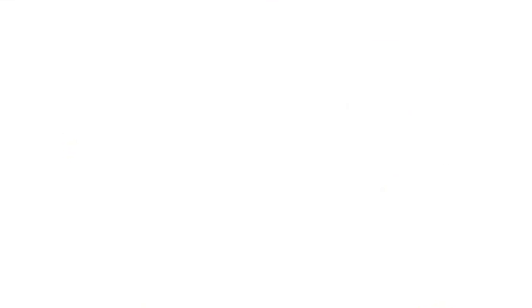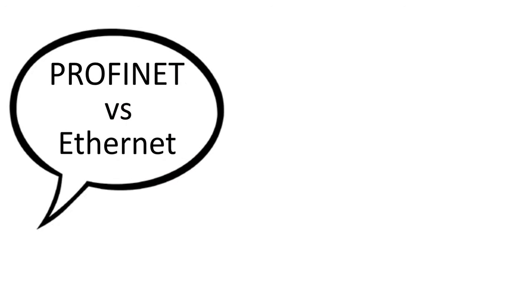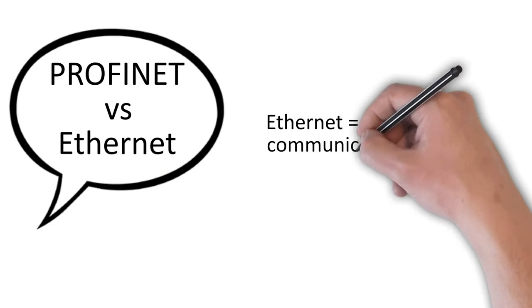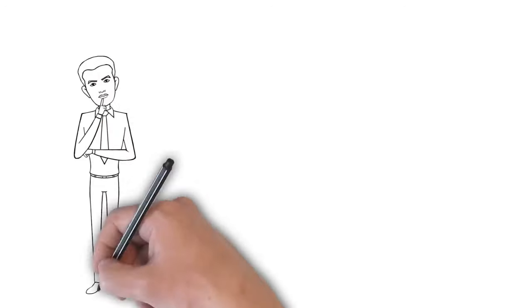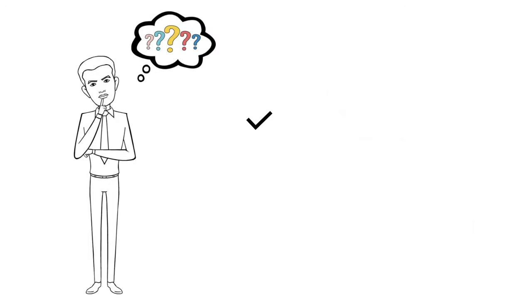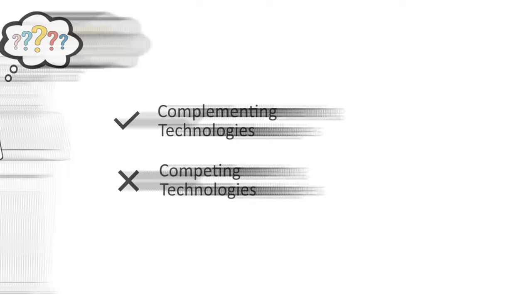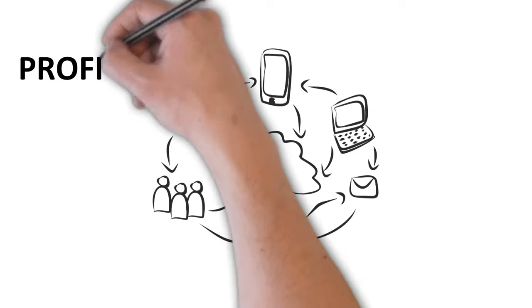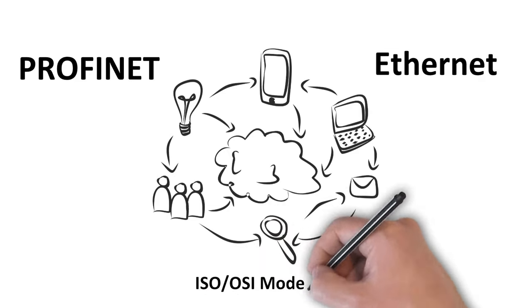Let's go to the whiteboard for a complete Profinet versus Ethernet comparison. What is the difference between Profinet and Ethernet? In short, Ethernet is a network communication medium and Profinet is an industrial Ethernet standard. However, comparing Ethernet and Profinet is not easy because they are complementing technologies, not competing technologies. They fulfill different tasks within a communication system. We can explain this by introducing the ISO-OSI model.